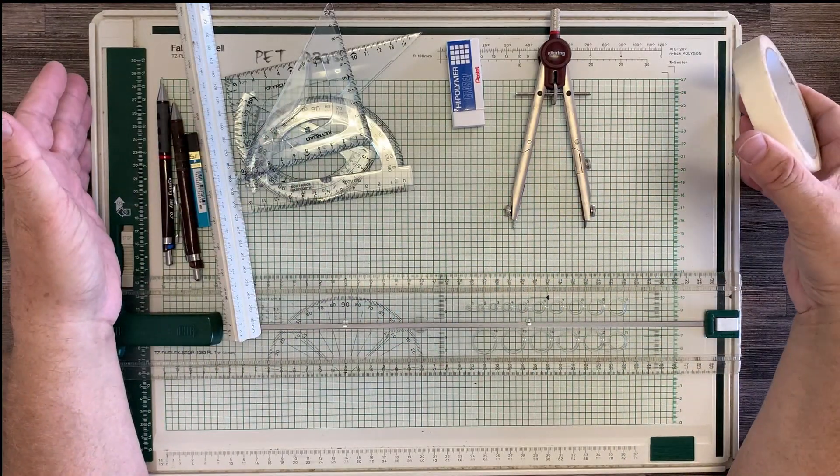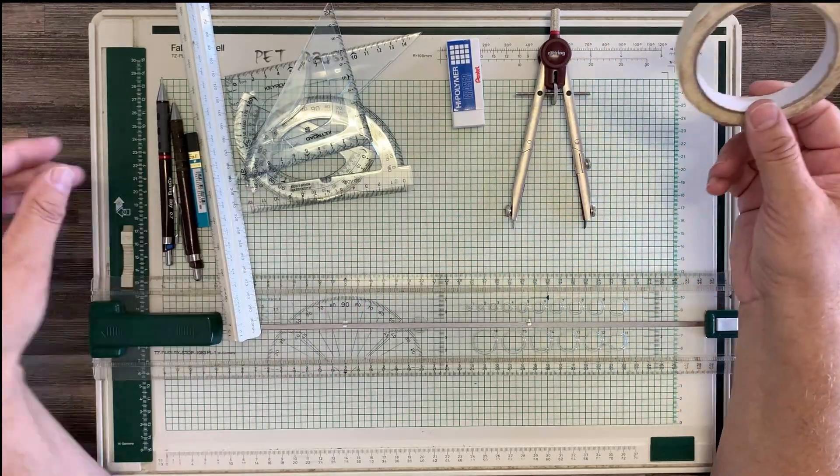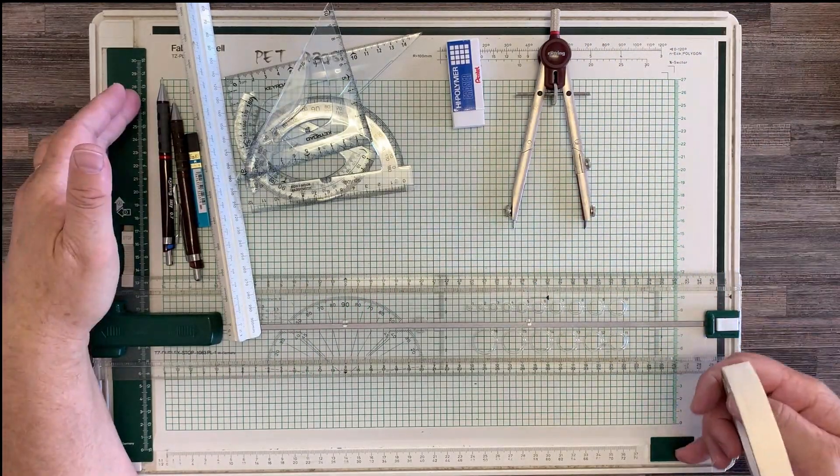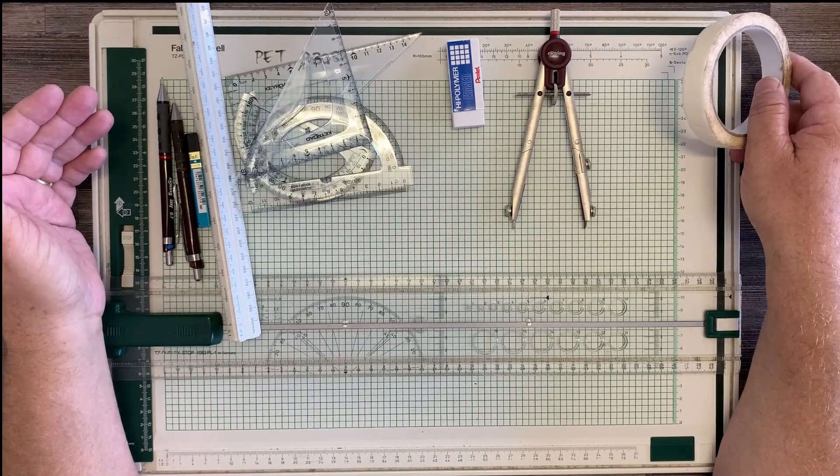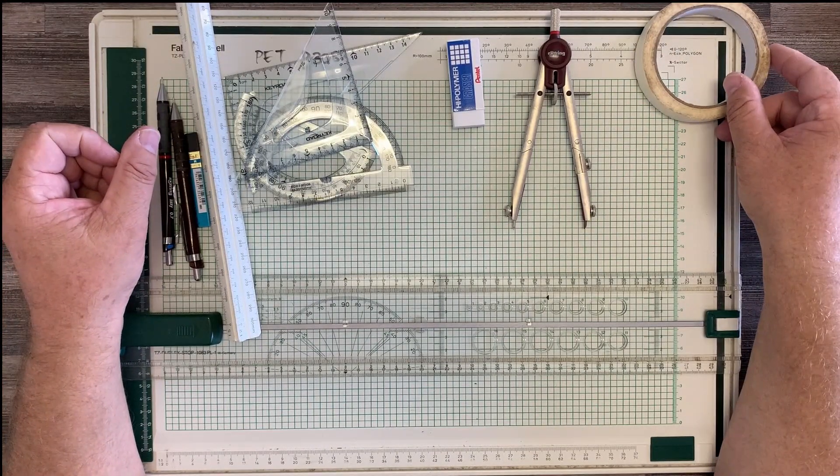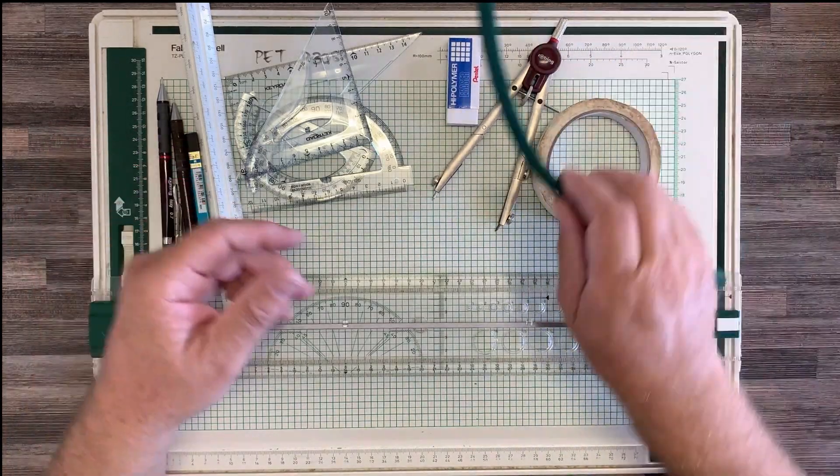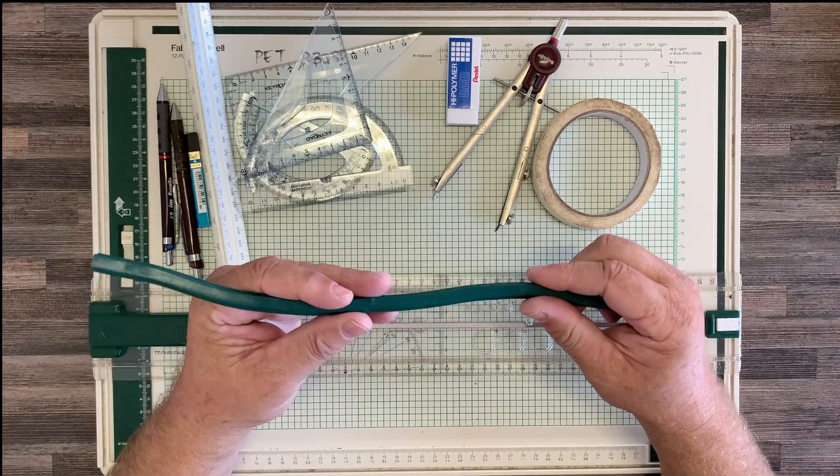All right, so a compass, that's very important. Then we have some masking tape. Depending on how you're drawing and what you're drawing on, you may need to stick your paper down, hold it down with masking tape. These drawing boards have clips on the sides and the bottom to hold your paper in place.